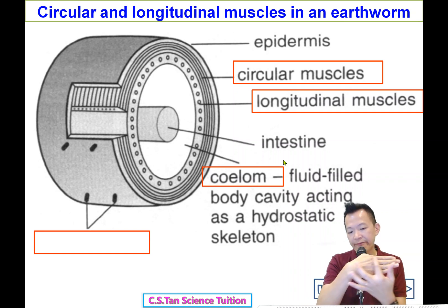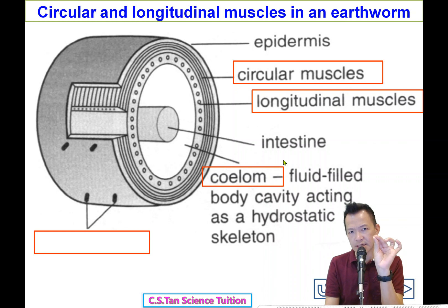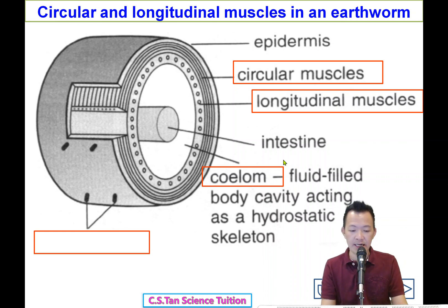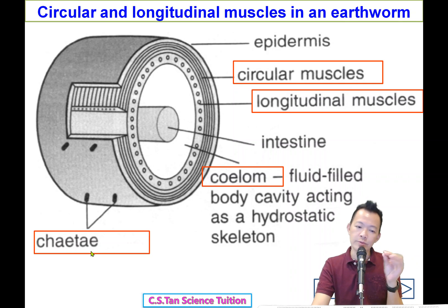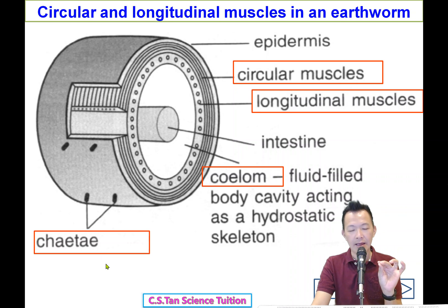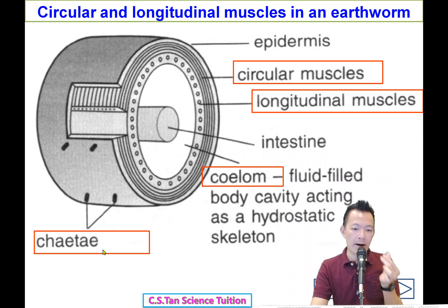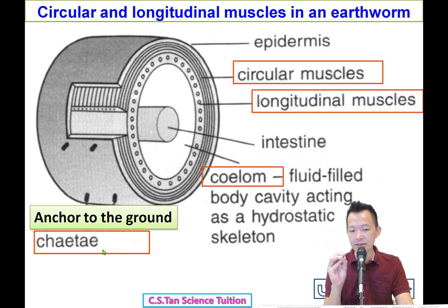These small structures on the outer surface cannot be seen by the naked human eye. We call them setae. I checked many dictionaries and I pronounce it as 'setae.' They are tiny hair-like structures on the surface of the earthworm's body. Next, what is the function of these setae?